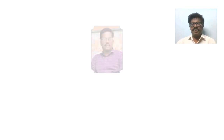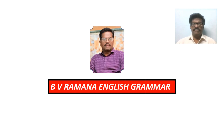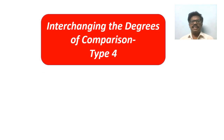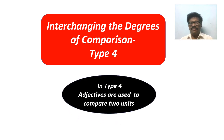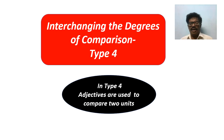Hi there, this is Biviramana Teacher in English. Welcome to Biviramana English Grammar. In this video I would like to share with you the topic: interchanging the degrees of comparison, Type 4. In this type, form adjectives are used to compare only two units. When you compare two units, there will be only two degrees — positive degree and comparative degree.